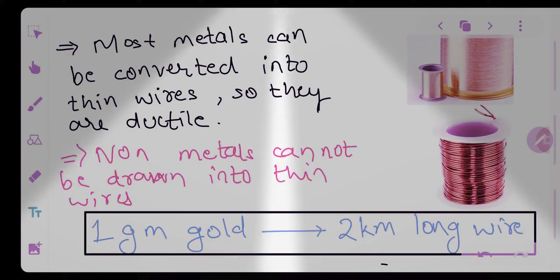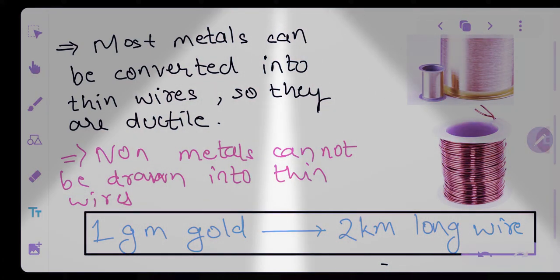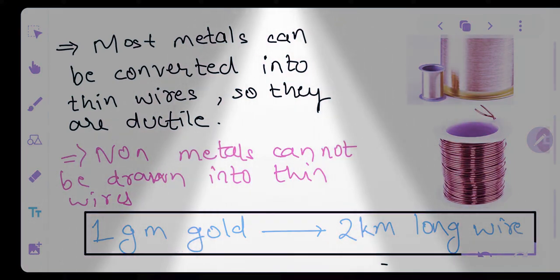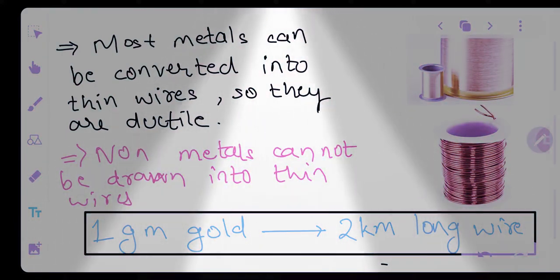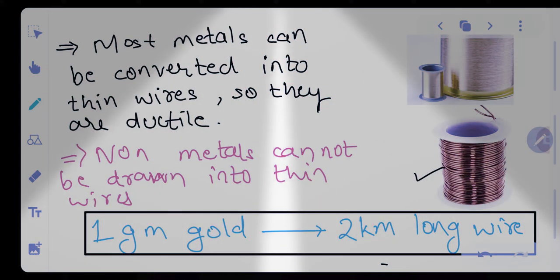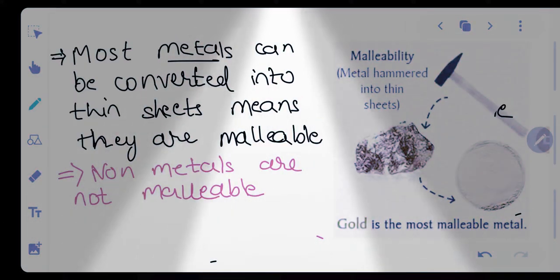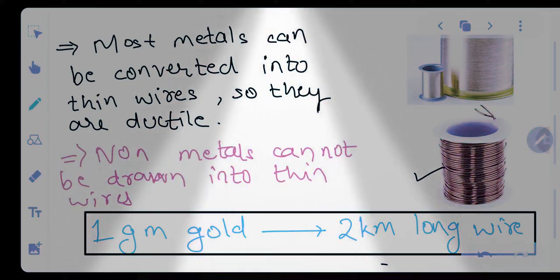Moving ahead — most metals can be converted into thin wires, so they are ductile. Just as you can change a metal's shape into a rectangle or circle, you can also convert any metal into thin wires by hammering or applying force. Copper wires are generally used for electricity purposes, and brake wires in vehicles are also made from aluminium. For malleable property examples, aluminium wrapping used in food packets for food preservation uses metal sheets.